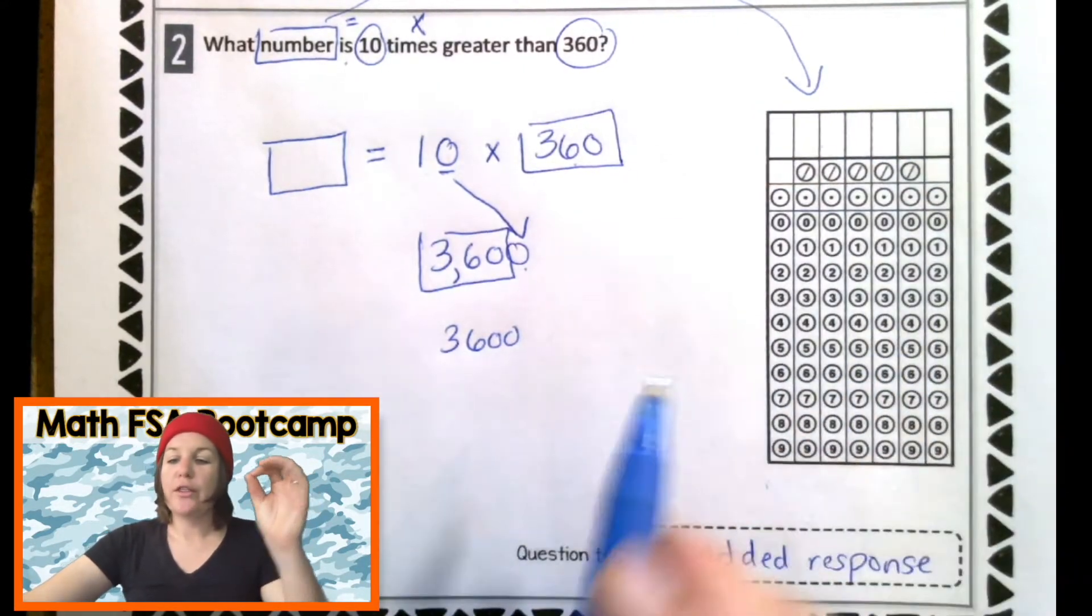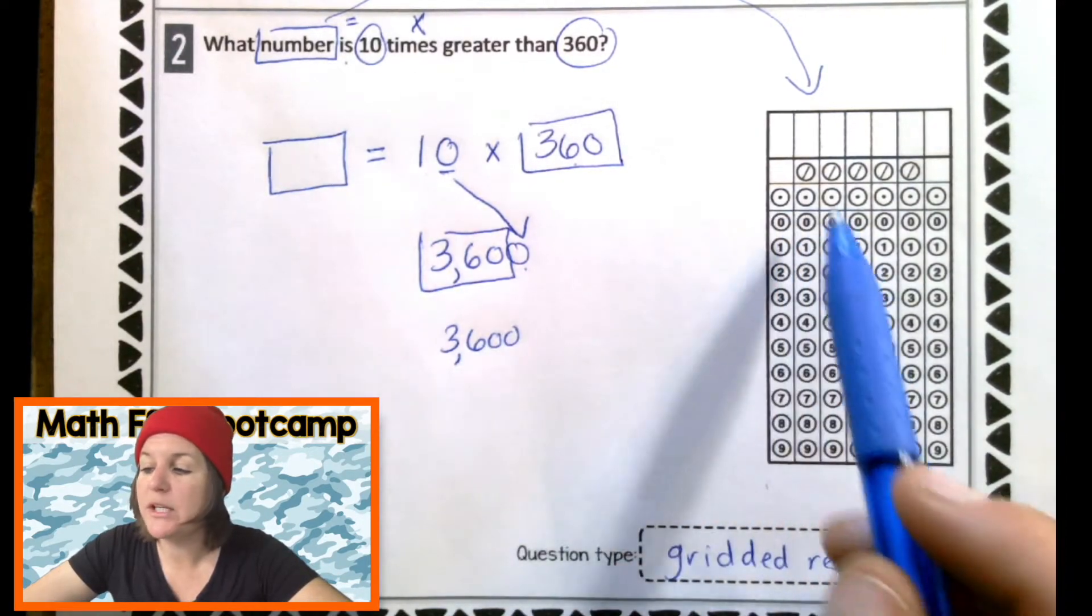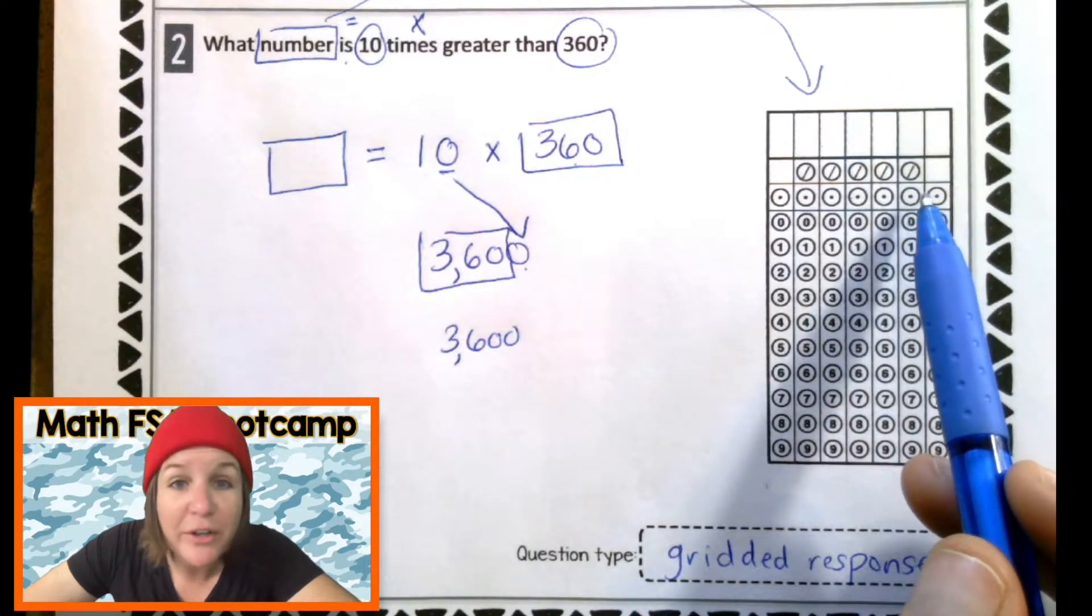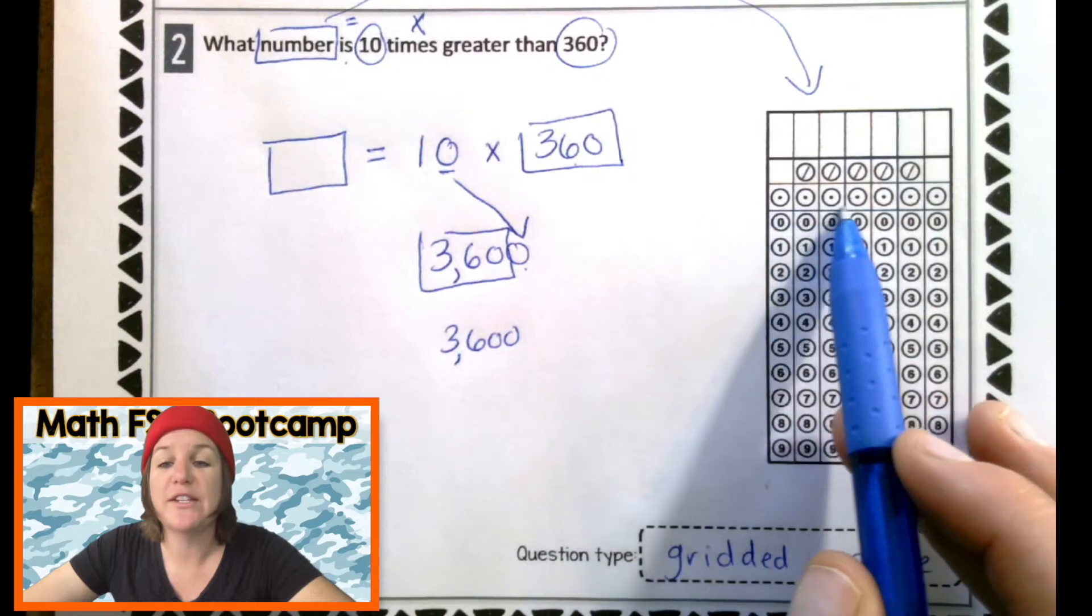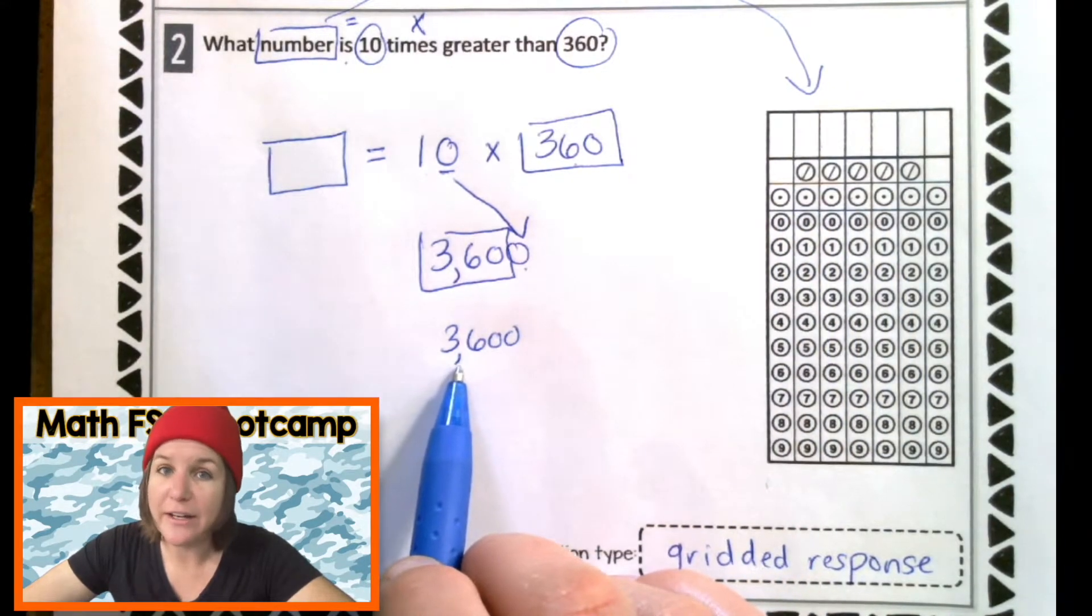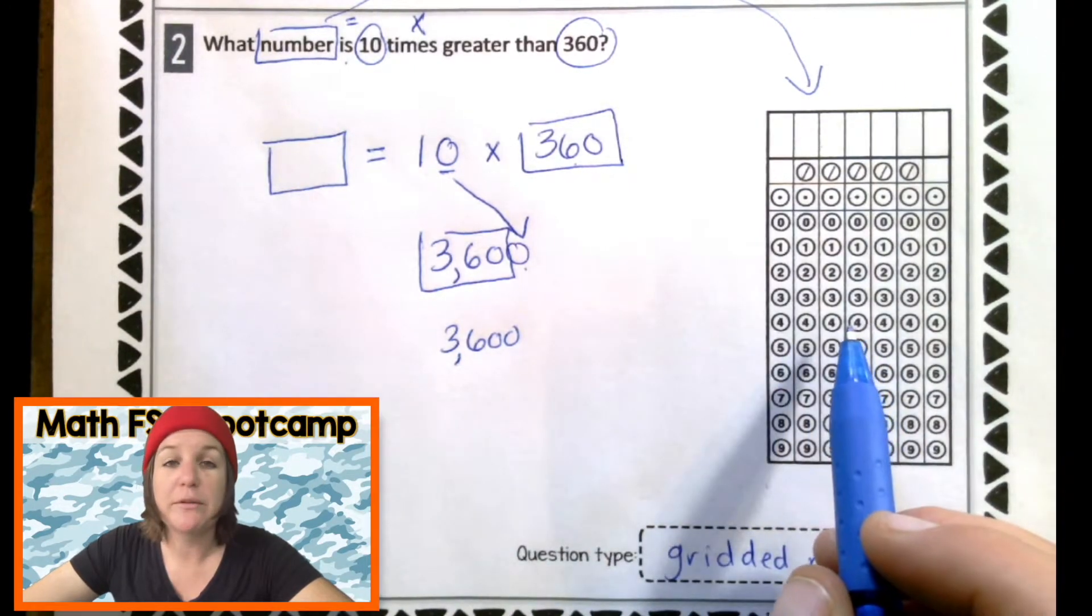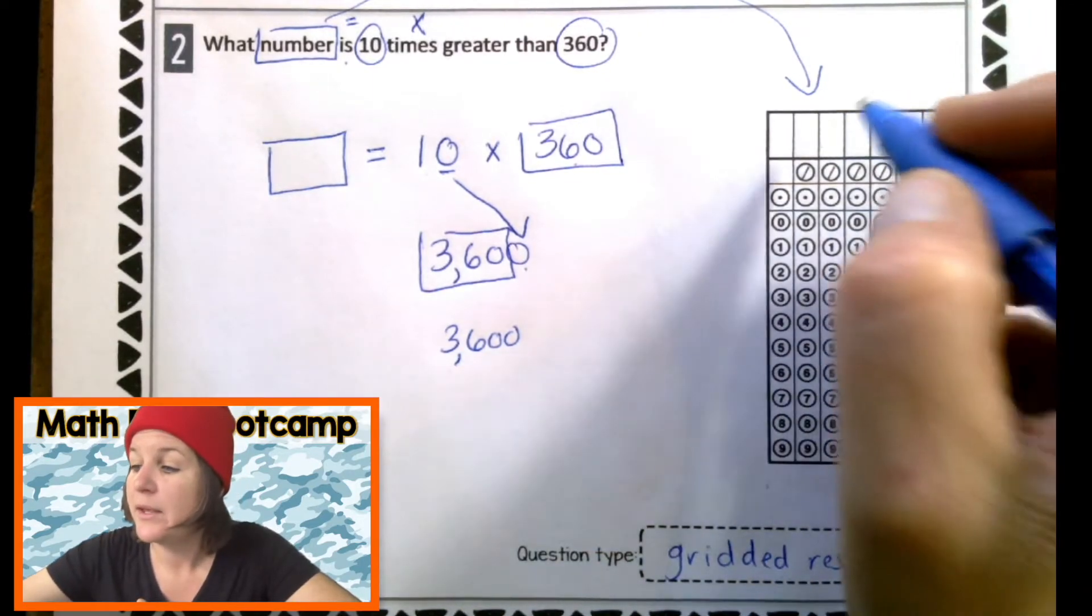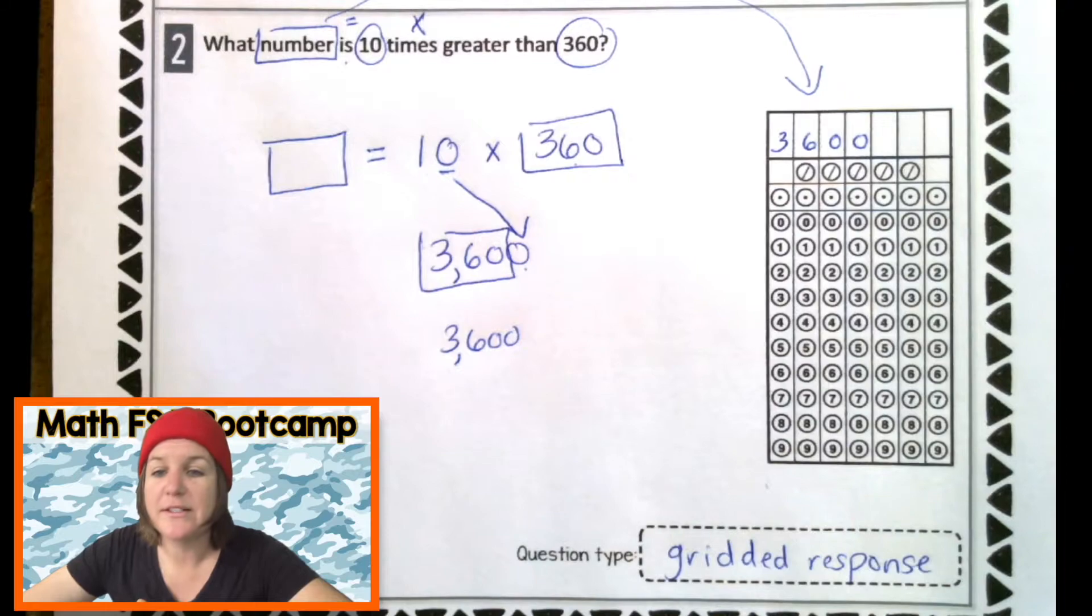Now, 3,600 has a comma in it. But when we go to put it in, these are not commas. These are what? They're not periods either. They're decimals. And we only use these when we're using a decimal. So if your answer, I know I get on my students all the time, make sure you include your comma. But for the gridded response, there's nowhere to put a comma. So we just don't put it. So I'm going to write it like this, 3600.